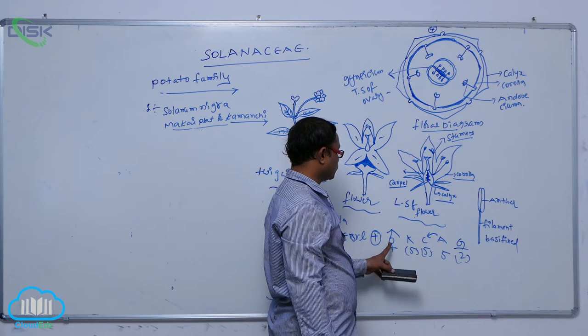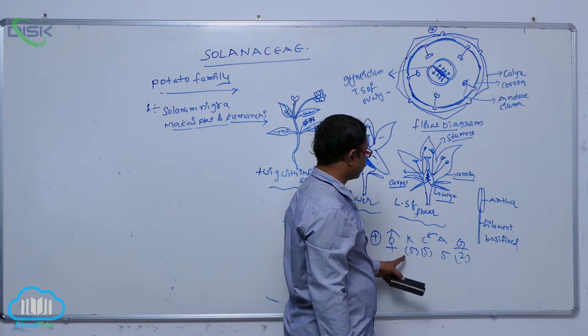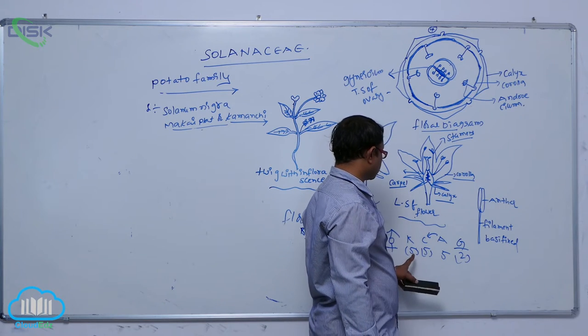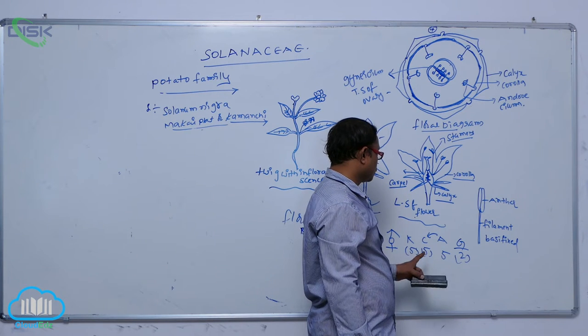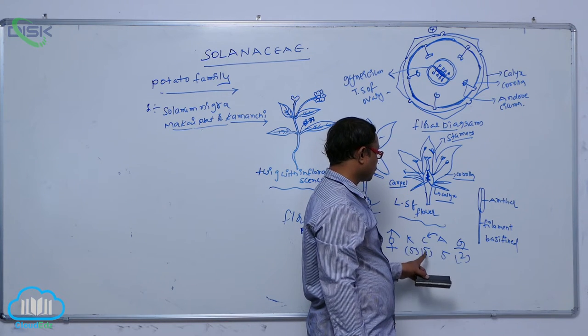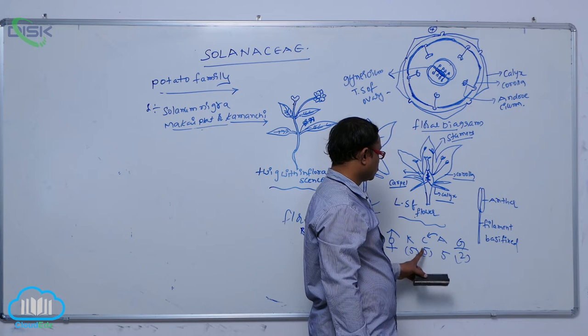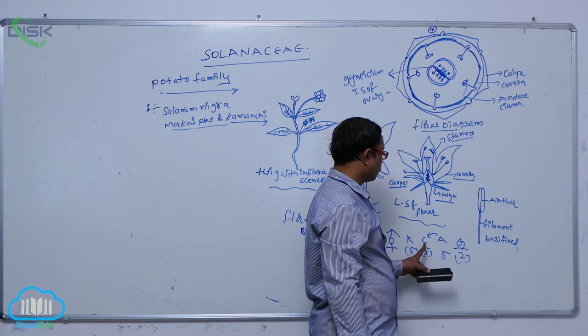So this indication of that bisexual. So K indicating of that calyx in the sepals are fused condition. So that is known as that gamosepalous. After that corolla, petals are five, fused condition. So that is known as that gamopetalous.